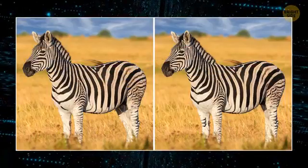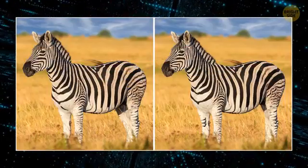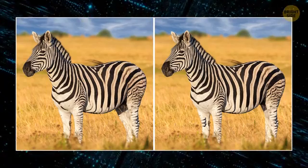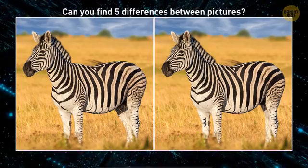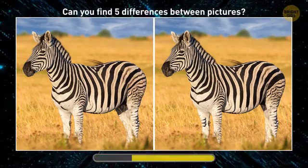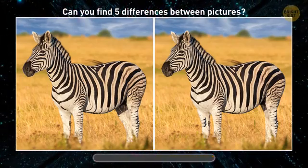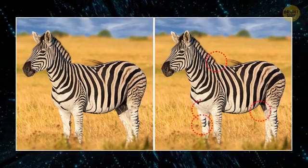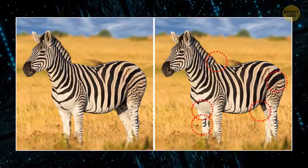How about a little safari? The zebra on the right is different from its pal on the left in five ways. Can you name them all? I only found three differences. Oh, now I see.